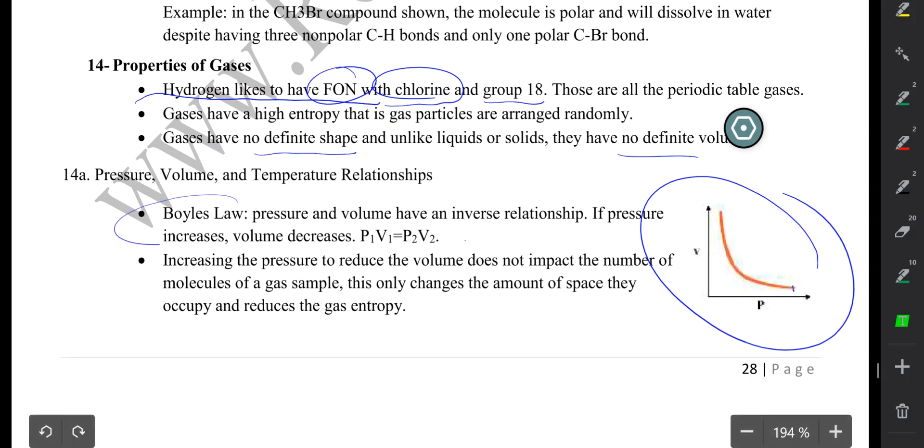So Boyle's law tells us that the product of the pressure and the volume, when you multiply the initial pressure by the initial volume of a gas, your product is going to have to be equal to your final pressure multiplied by your final volume of the gas.